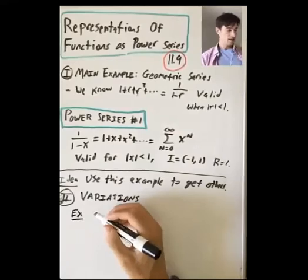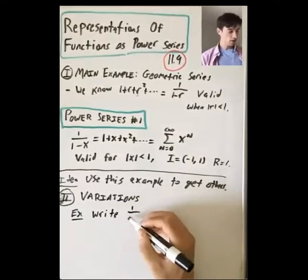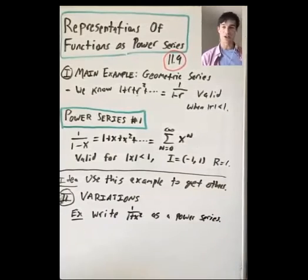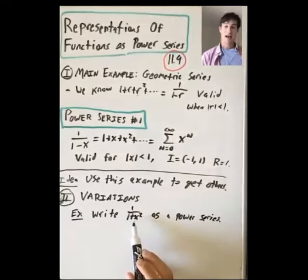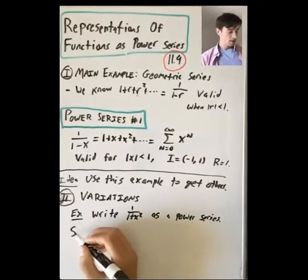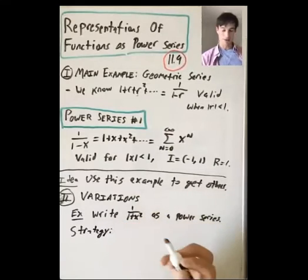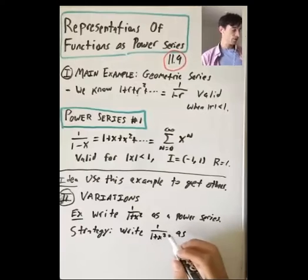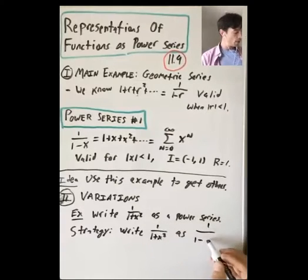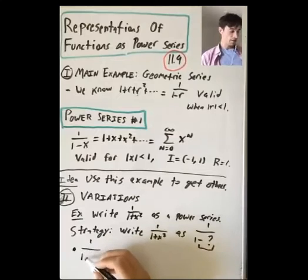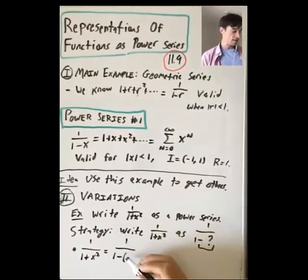Let's say we want to write 1 over 1 plus x squared as a power series. What does it mean to write a function as a power series? We want to find some power series such that everywhere it converges, it equals 1 over 1 plus x squared. Our strategy is to rewrite this function as 1 over 1 minus something. So: 1 over 1 plus x squared equals 1 over 1 minus (minus x squared).